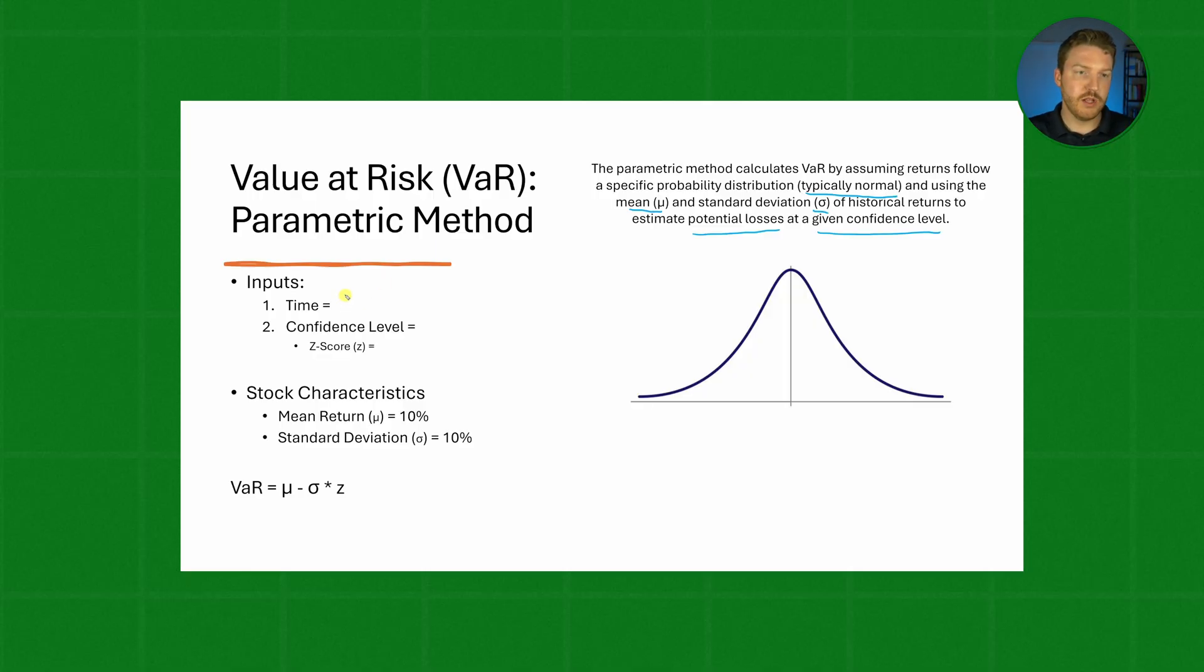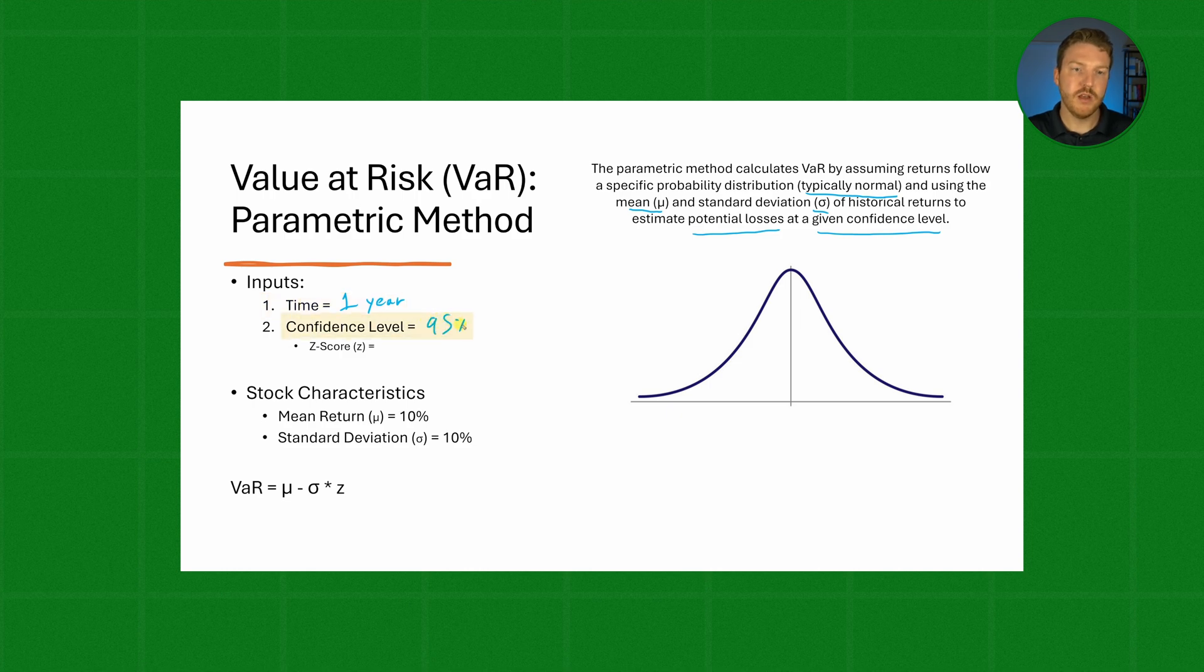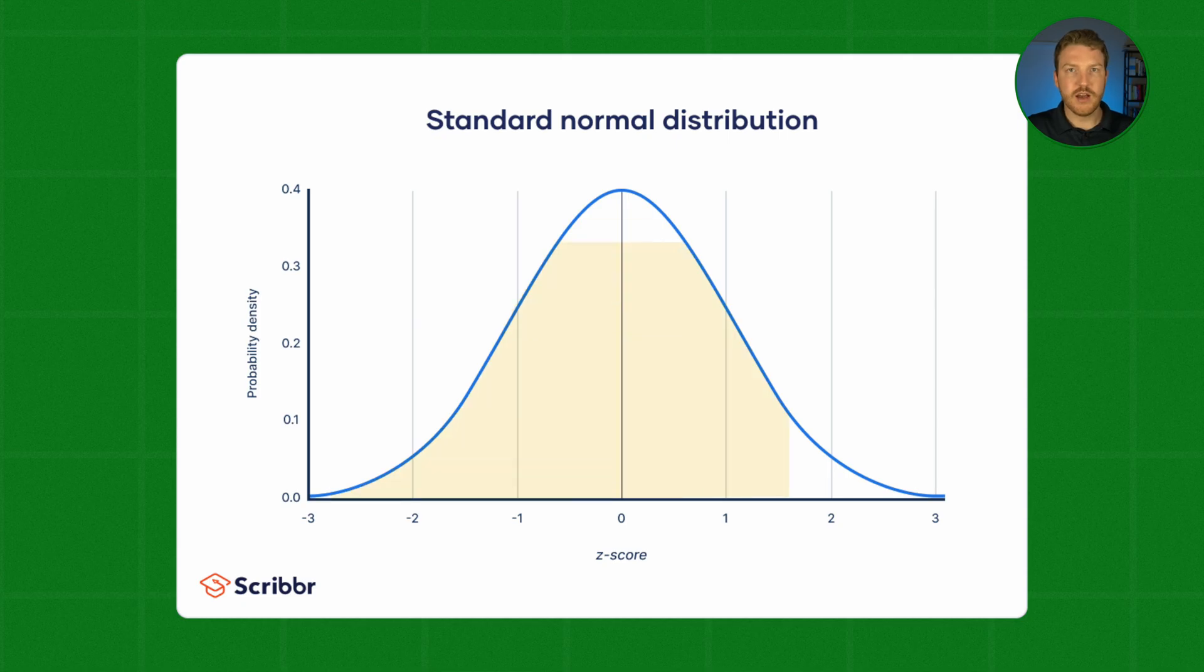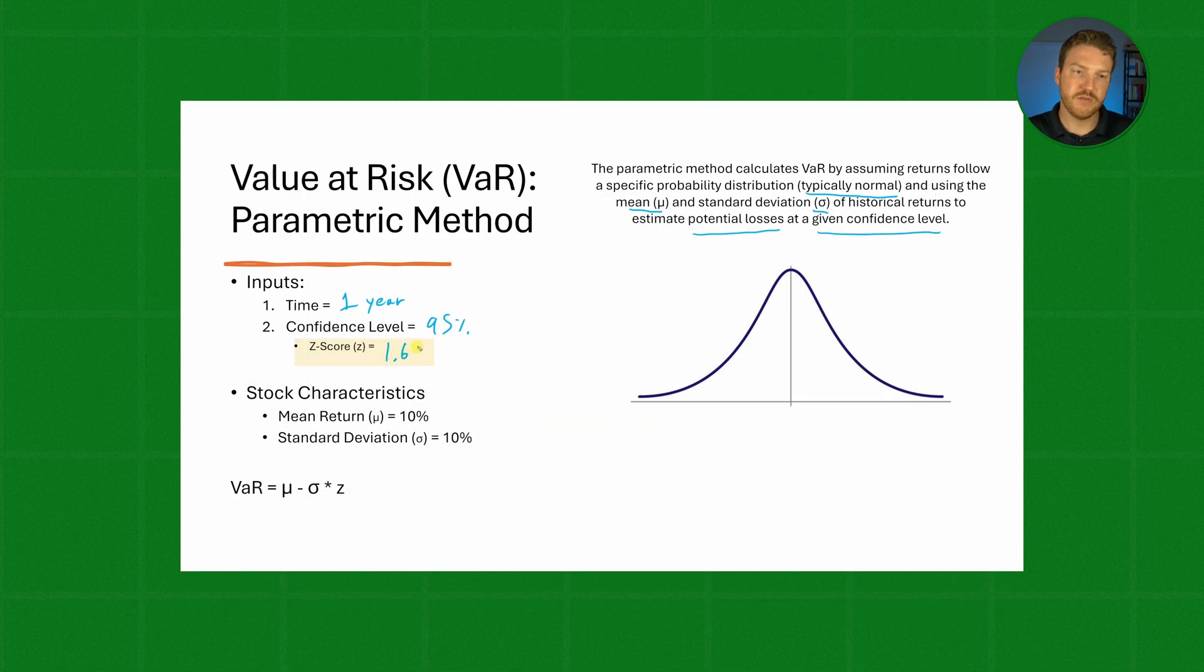In this example, let's use a time period of one year and a confidence level of 95%. If we use a one-tailed test, a confidence level of 95% will give us a Z-score of 1.65.